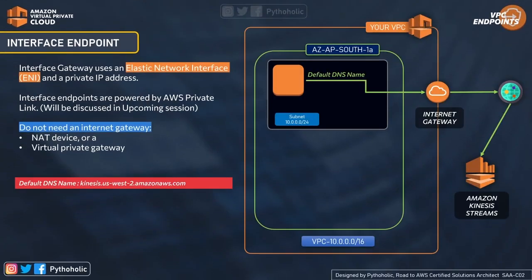For interface endpoints, remember that an interface endpoint uses an elastic network interface to create the VPC endpoint connection. It's easy to recall: interface endpoint uses elastic network interface. It may sound simple, but connecting the dots helps you recall things instantly.